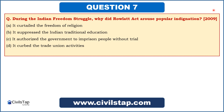This question came in the prelims of 2009: 'During the Indian freedom struggle, why did the Rowlett Act arouse popular indignation?' Options are: it curtailed the freedom of religion; it suppressed Indian traditional education; it authorized the government to imprison people without trial; and it curbed trade union activities. We have already read that the Rowlett Act had a provision to imprison people without trial for up to 2 years, so C is the answer.